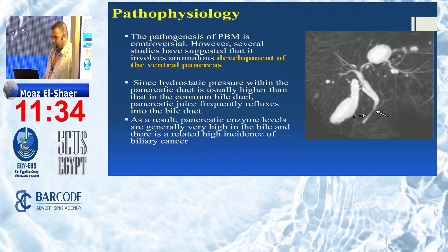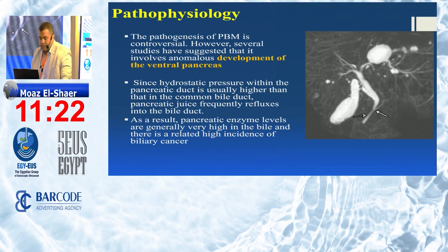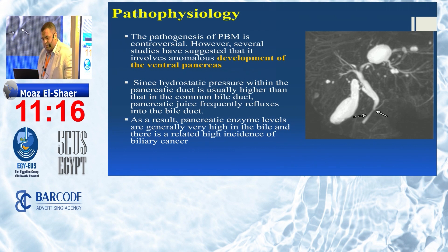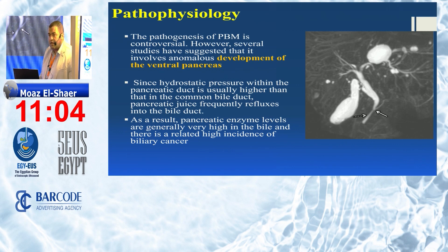The pathogenesis of pancreatobiliary maljunction is controversial. However, several studies have suggested it involves anomalous development of the ventral pancreas. Since hydrostatic pressure within the pancreatic duct is usually higher than that in the common bile duct, pancreatic juice frequently refluxes into the bile. As a result, pancreatic enzyme levels are generally very high in the bile, and there is a related high incidence of bile duct cancer.